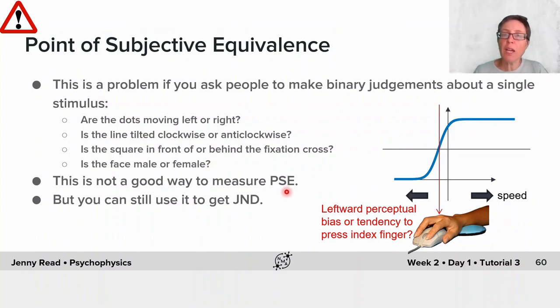That's not a good way to measure PSE because you don't know whether you're seeing a perceptual bias, which presumably is what you're interested in, or the subject's tendency to press their index finger when they're unsure. But you can still use this approach to get JND. If you want to get PSE, then you're going to have to use a two interval approach.